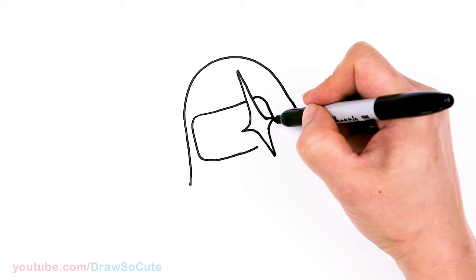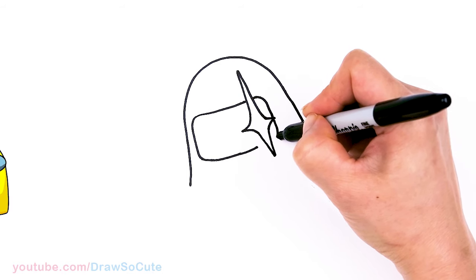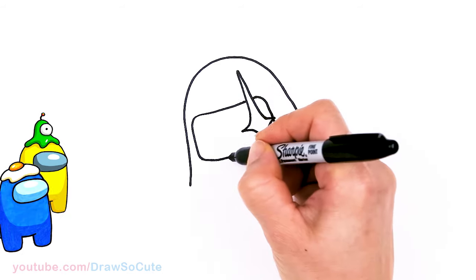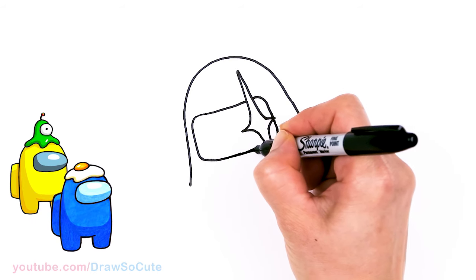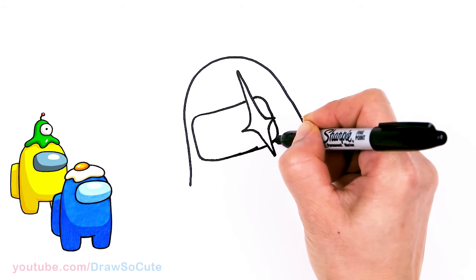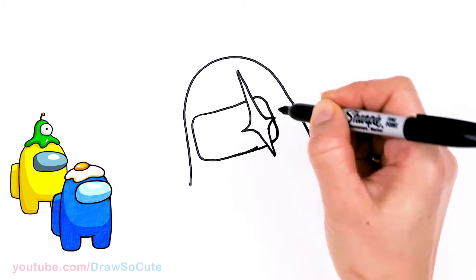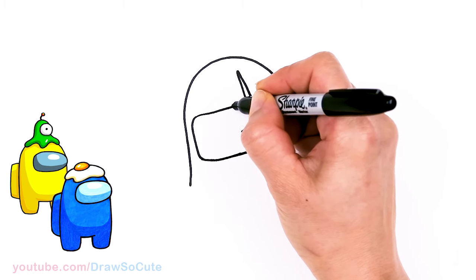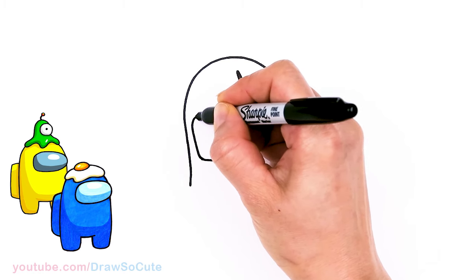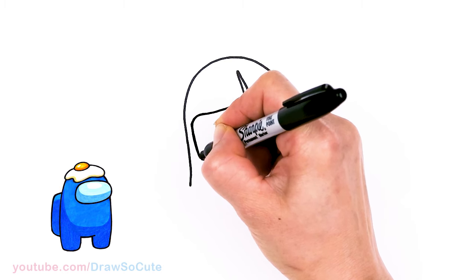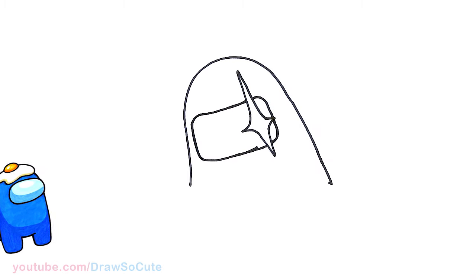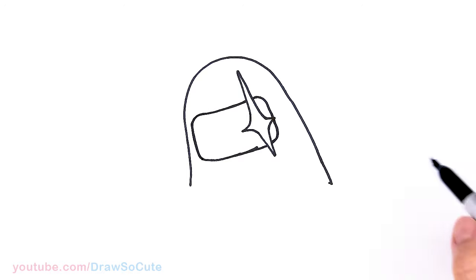Following this same angle, bring it in, and connect. Now I can go ahead and just thicken everything up. So I have my visor.